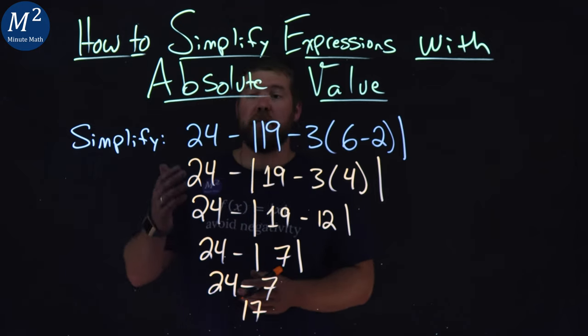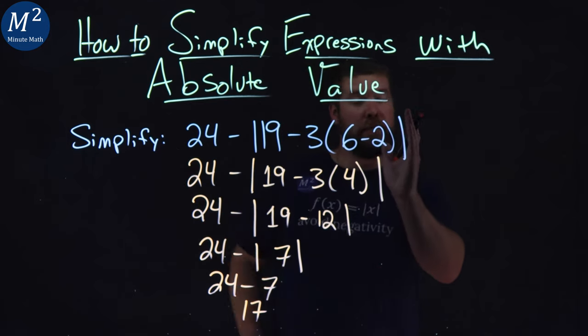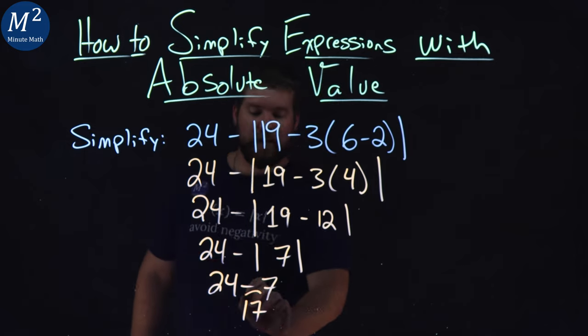And there we have it. We've simplified our expression, 24 minus the absolute value of 19 minus 3 times (6 minus 2), and we got 17.